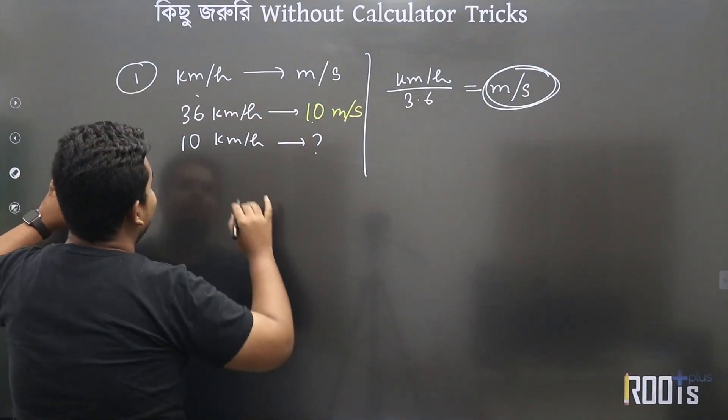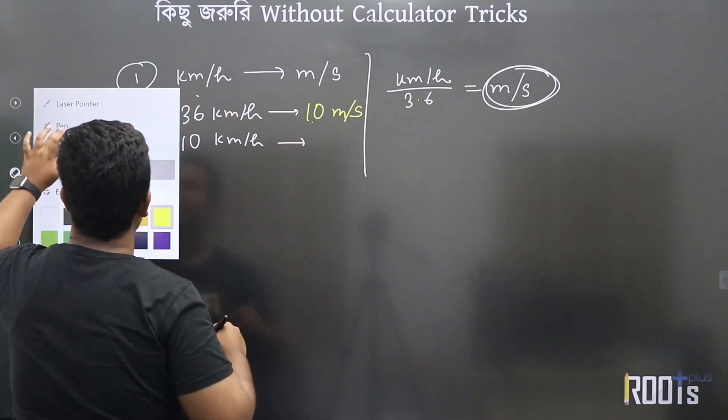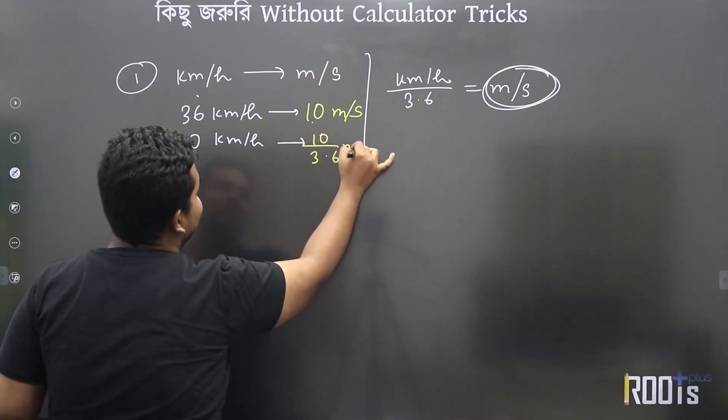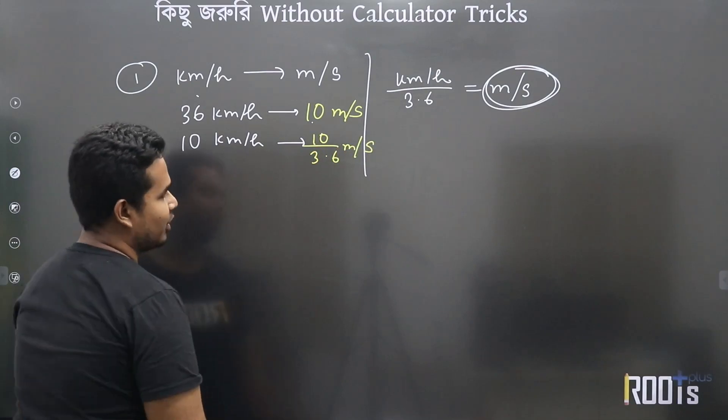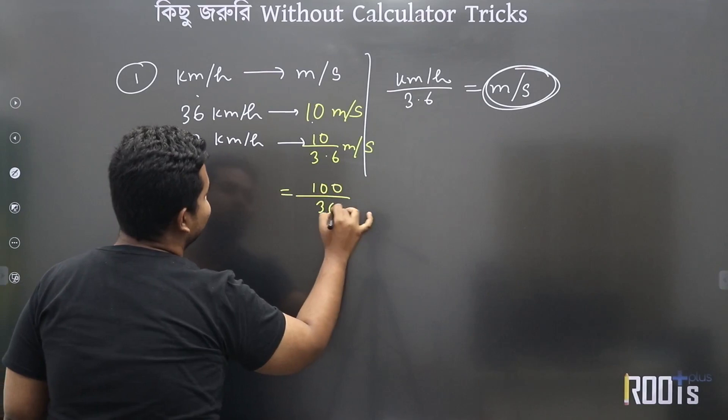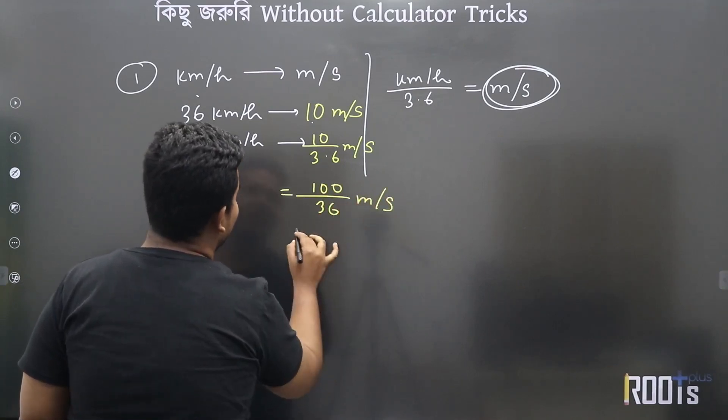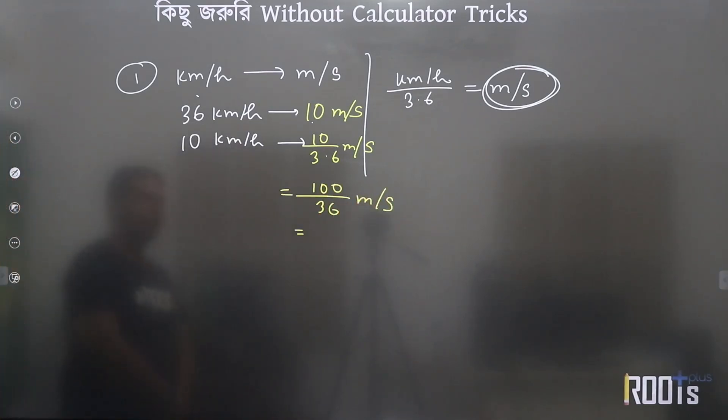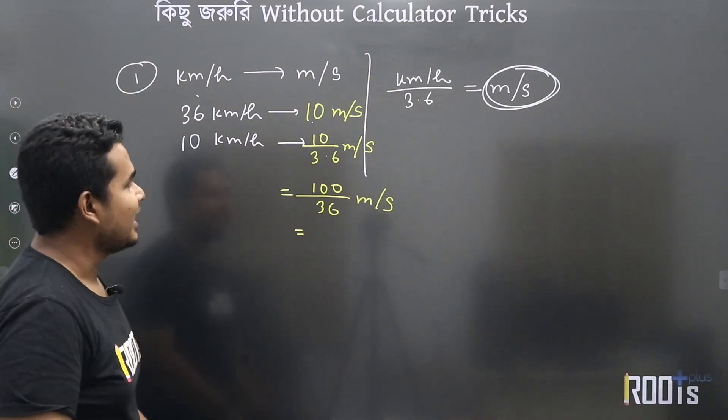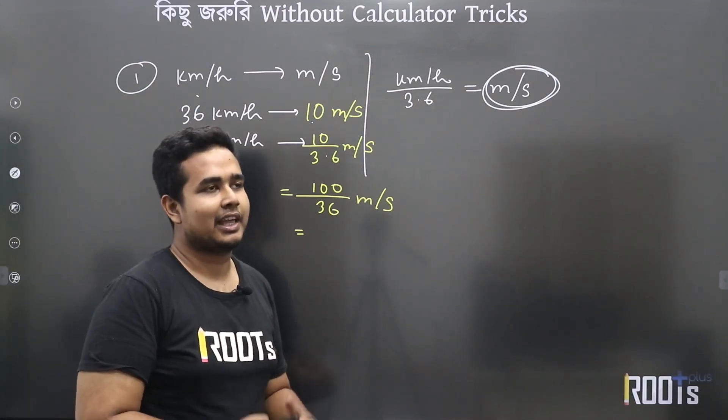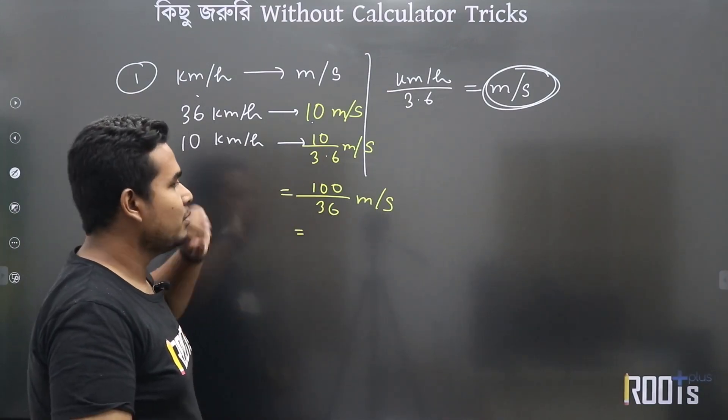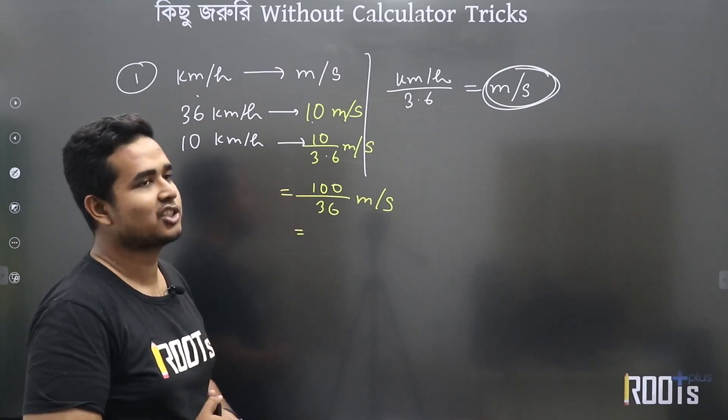Let me show you: 36 kilometers per hour, if we divide by 3.6, we get 10 meters per second. Similarly, 10 kilometers per hour divided by 3.6 gives us 10 divided by 3.6 meters per second. We can write this as 100 by 36 meters per second. For MCQ calculations, we can stop here.